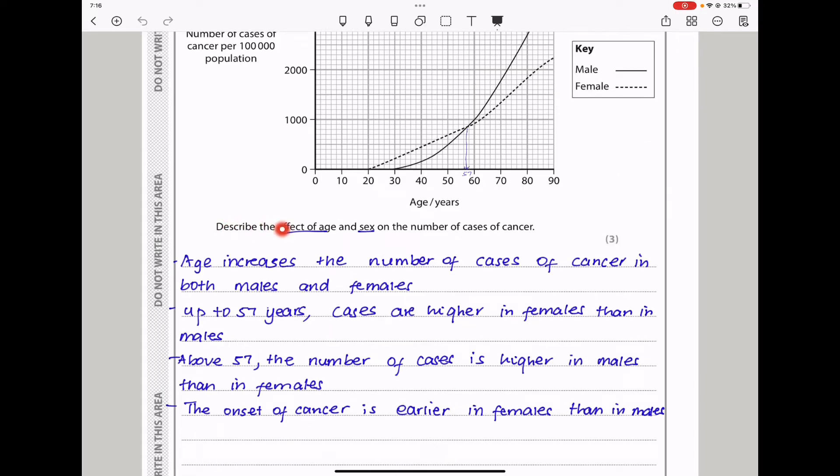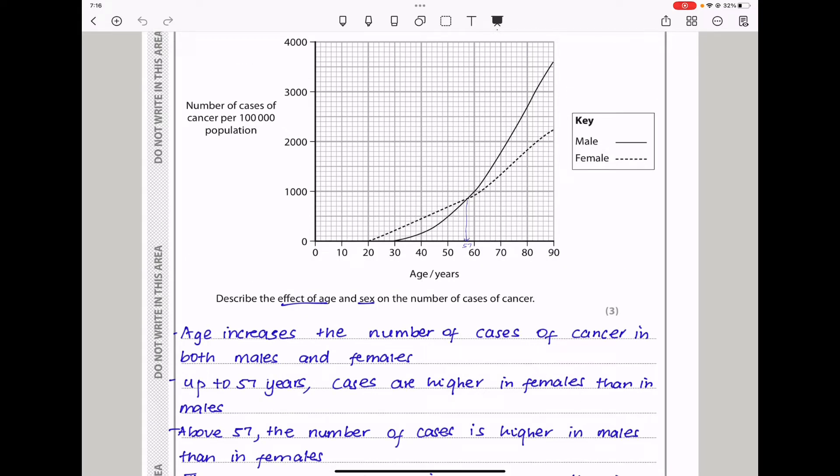And after that, there are more cases in males than in females. For every graph question you have given, you have to look through the data in order to fully understand it before you attempt to answer any question. So let us look at the question they've asked here. They say describe the effect of age and sex on the number of cases of cancer. When they ask you to describe, they want you to write about what you see or what you've observed from the data.